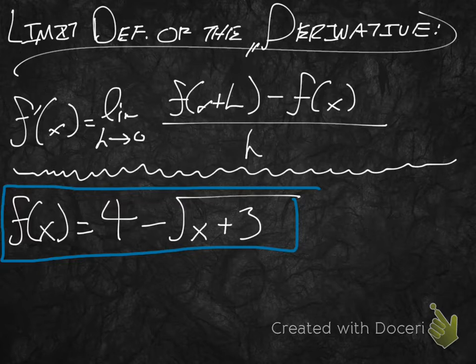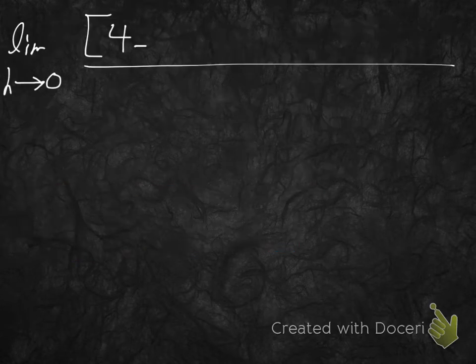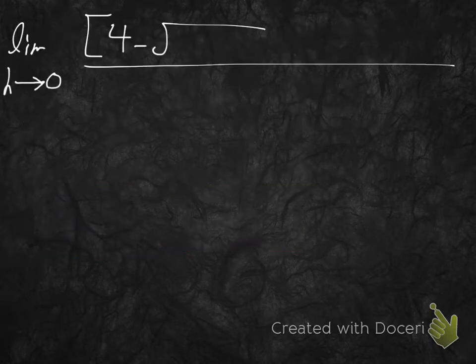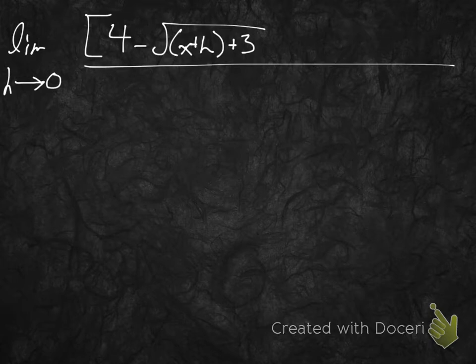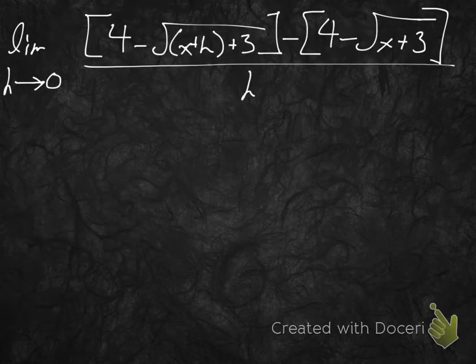Let's get started plugging and chugging. We're going to have the limit as h approaches 0 of 4 minus radical x plus h plus 3, minus 4 times radical x plus 3, because we're just rewriting the initial function there. And all of this is over h.